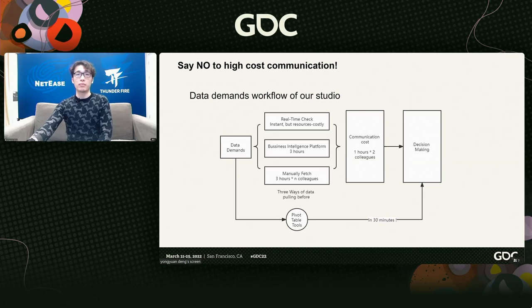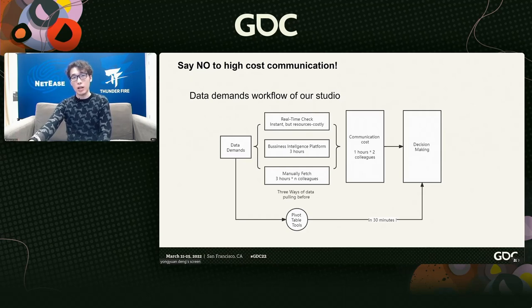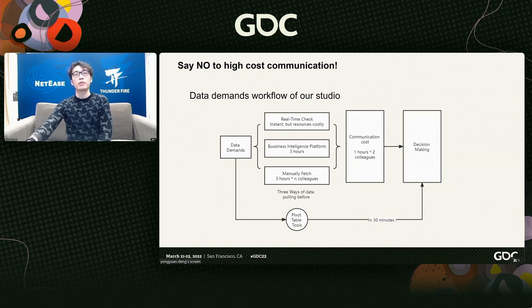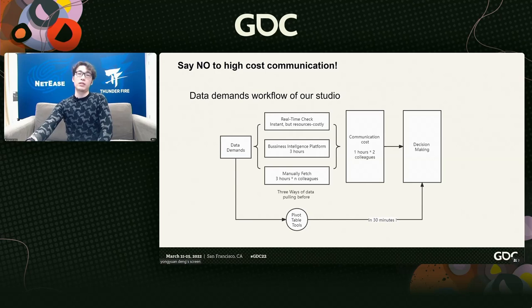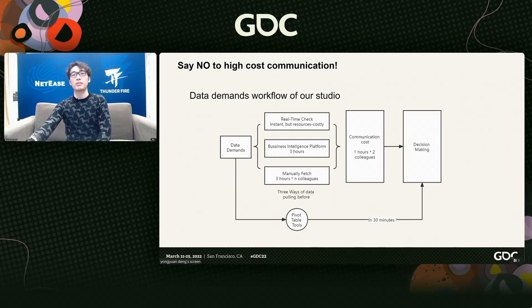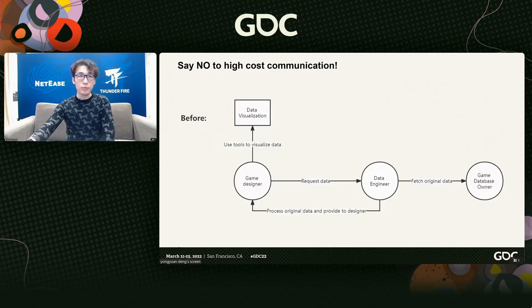Taking this diagram as an example: a real-time check method is instant but resource-costly. The BI platform may cost an engineer around three hours to develop for a single demand. The manually fetched method may also cost three hours and many colleagues to coordinate. All three methods also involve communication costs — data product managers handling coordination with designers may cost everyone around an hour. So every method has either a resource cost issue or a time cost issue. Our tool, as a customizable solution, can handle different demands and a single designer can use it alone.